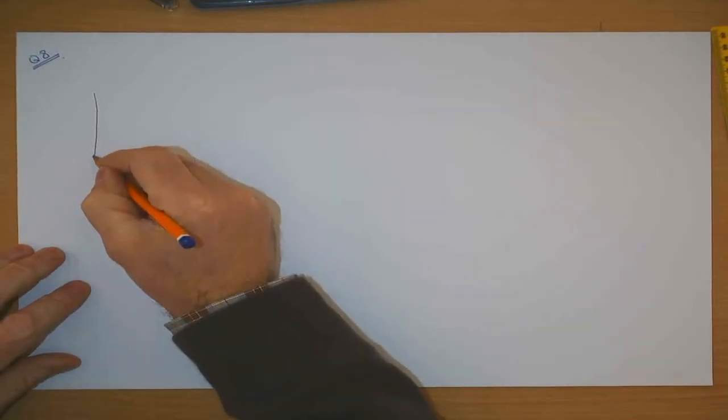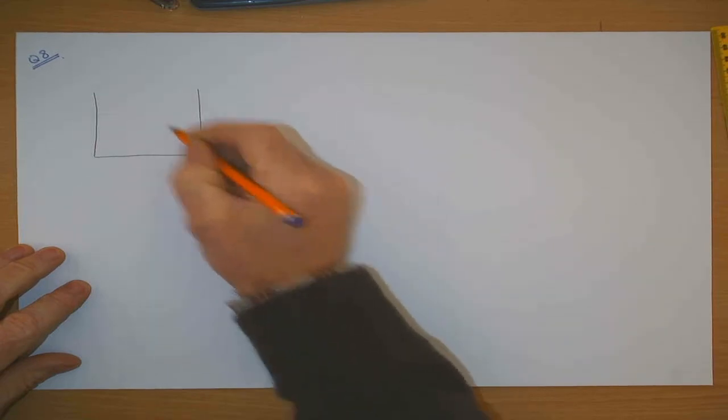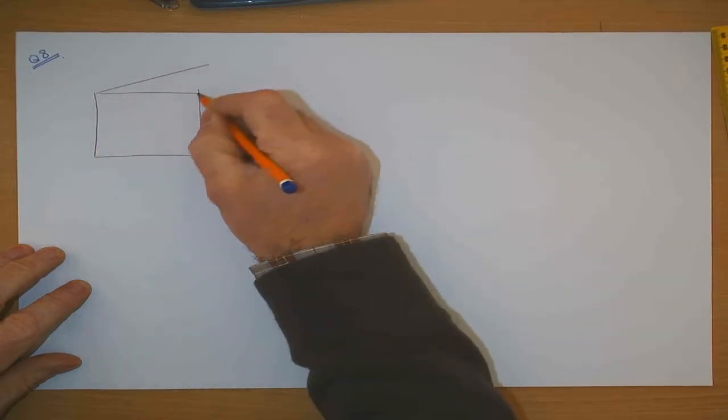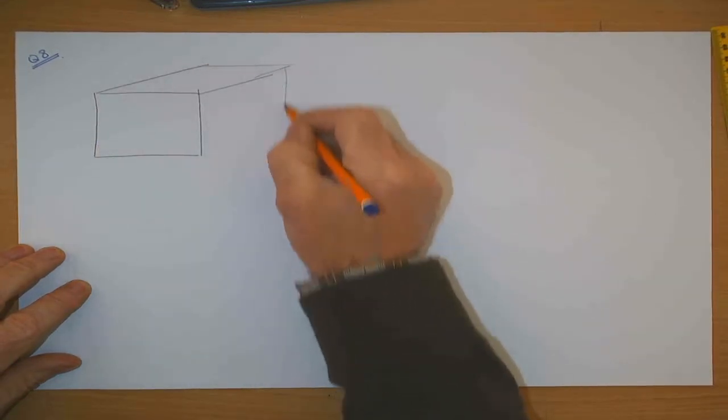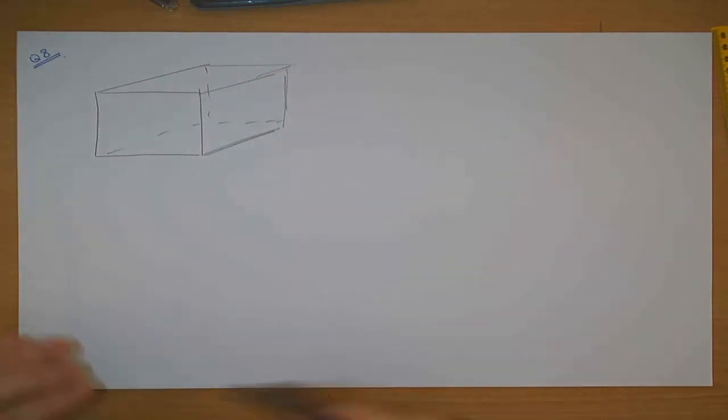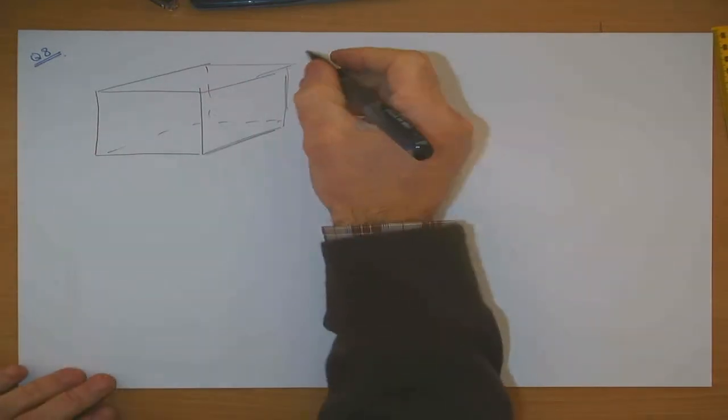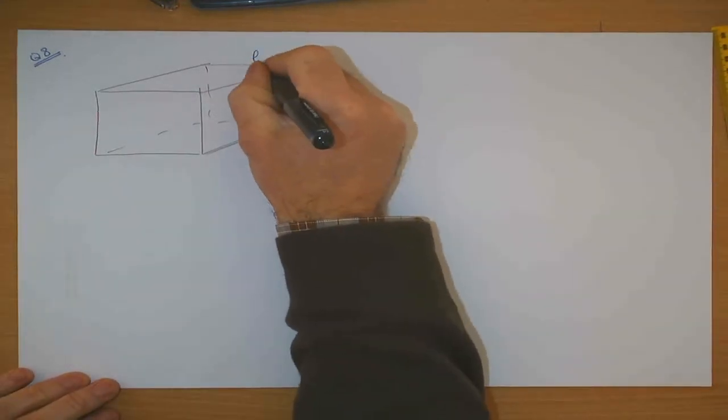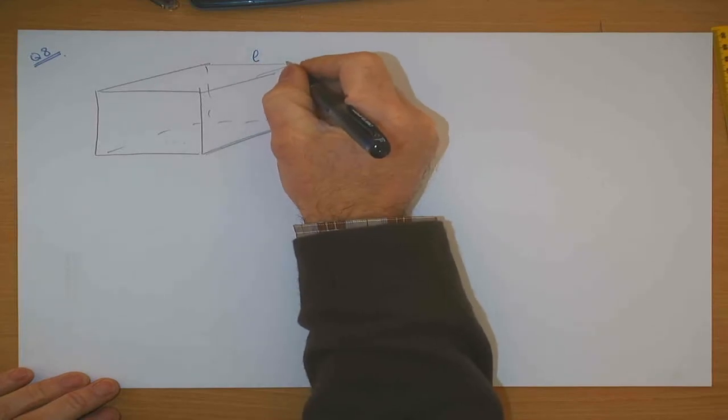Question: we have a cube. I always find the diagram a huge help in these questions, so we have a cube with the invisible lines. The cube, the length of the edge of the cube, is decreasing at a rate of four centimeters per minute.